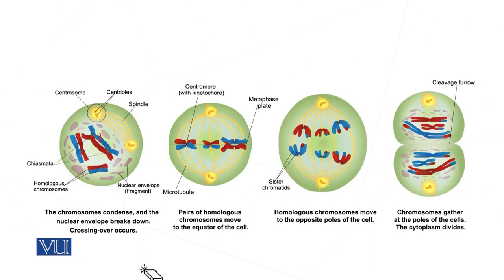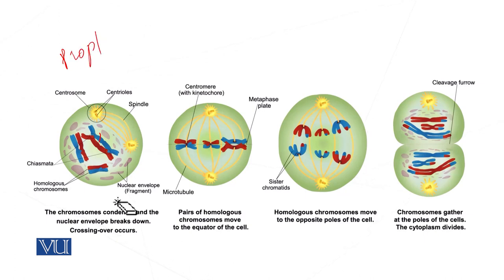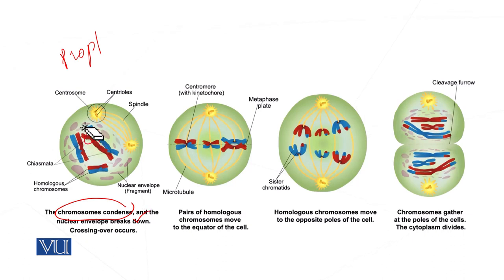Now let's visualize the stages of meiosis 1. In prophase 1, the chromosomes first condense, then the nuclear envelope breaks down. The chromosomes come in contact with each other, where chasmata formation occurs — the exchange of genetic material, recombination, and crossing over all take place. At this stage, genetic material is exchanged between the chromosomes.